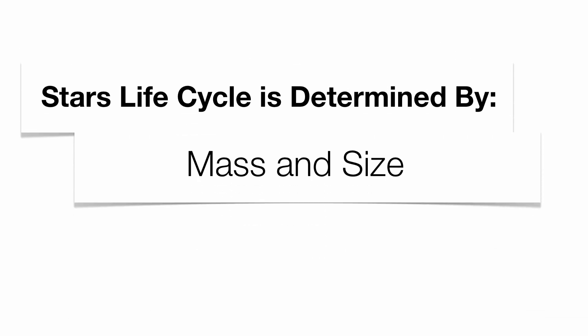Now, life cycle of stars determined basically by what we consider mass and size of the star. Stars go through the same life cycle as a human: young age, middle age, and old age. So depending upon how much mass it has and the sheer size of it is going to determine what type of life cycle you're going to have.